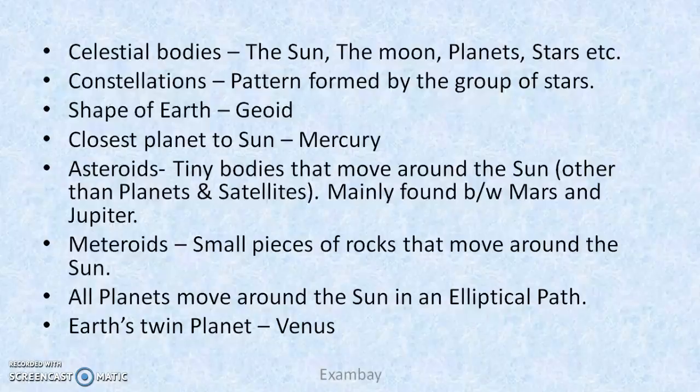Because at the poles, if you take a ball with two ends, the poles are contracted and the equator bulges. So this is Earth's shape. Closest planet to the sun — Mercury is the closest planet to the sun. Then we have two things: asteroids and meteoroids. Asteroids are tiny and small bodies that move around the sun, just like planets, but they are not planets.